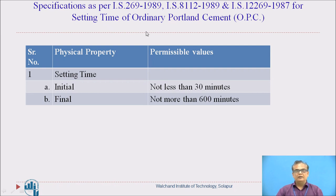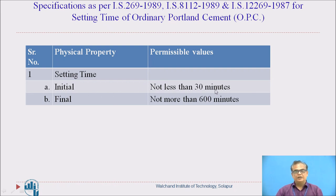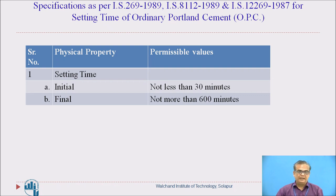Specifications are given by IS 269 and IS 8112 and IS 12269 for different grades of cement. For example, for OPC, all three codes give the setting time for all three grades of cement as: initial setting time not less than 30 minutes and final setting time not more than 600 minutes. Why initial setting time not less than 30 minutes? Because if quick setting occurs, it will not be possible to work with the cement, and sufficient time should be available for workers to place it. Final setting time should not exceed 600 minutes, that is 10 hours, so as to avoid damage or destruction of concrete — this is the maximum limit.